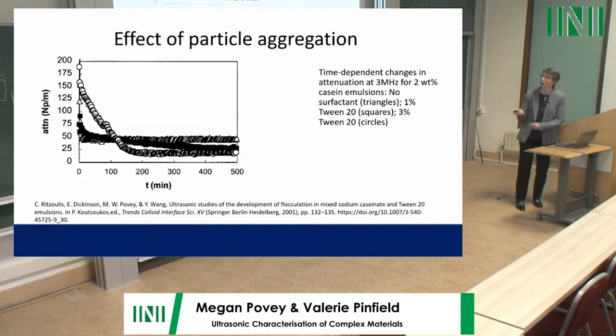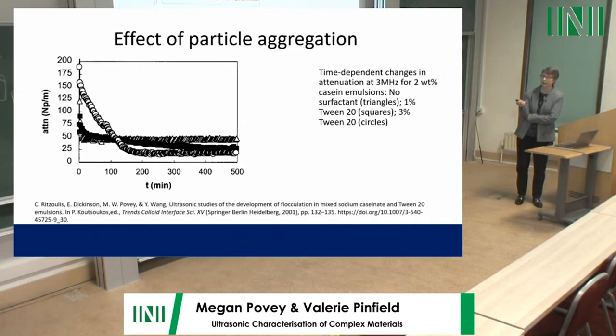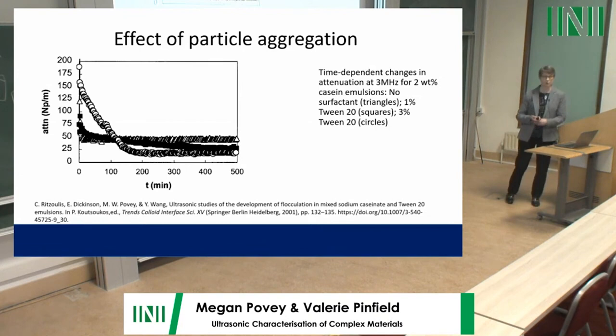This effect is demonstrated with an oil-and-water emulsion. When no aggregation occurs, the baseline attenuation is stable. Adding a second surfactant that generates an aggregation mechanism causes the attenuation to drop noticeably. This is evidence that aggregation can be detected through attenuation measurement — when particles come closer together, less energy is dissipated than predicted by the standard model.